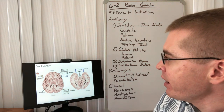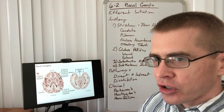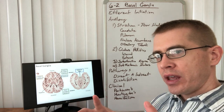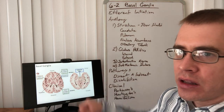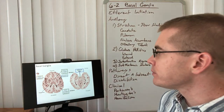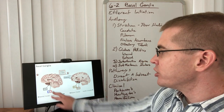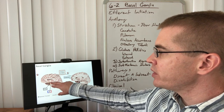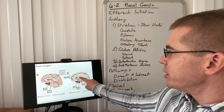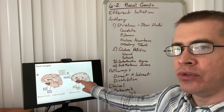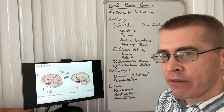As we move more inferiorly, we can see how the globus pallidus starts to appear nestled within the putamen. In the midbrain — the mesencephalon — we can see the substantia nigra itself. Here is a lateral view showing the relationship between the subthalamic nucleus and the substantia nigra. We can also see the entire C-shape of the caudate from this view, as well as the putamen and portions of the globus pallidus.